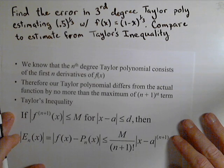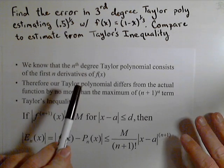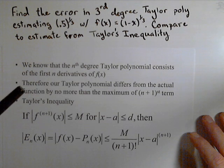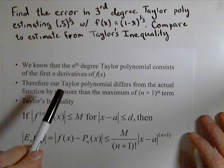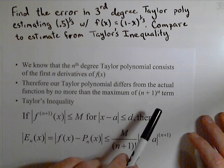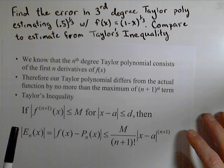Just a little bit about Taylor's inequality. We know that a Taylor polynomial consists of the first n derivatives of f of x, so it has information about the first n derivatives, so we would expect our Taylor polynomial to differ from the actual function by no more than the maximum of the n plus first derivative. That's the idea behind Taylor's inequality.